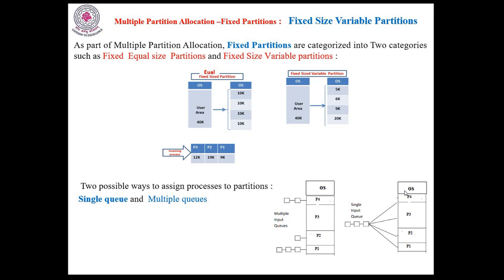In the single queue method, all processes wait in one queue. If we imagine waiting at a ticket counter with a single queue, we feel that if there were two or more queues, we could get the ticket in a shorter amount of time. There are certain weaknesses with a single input queue, which is why we want to move to a multiple input queue. When the same data is divided into multiple queues, the processing time will be reduced — that is the advantage of multiple queues.